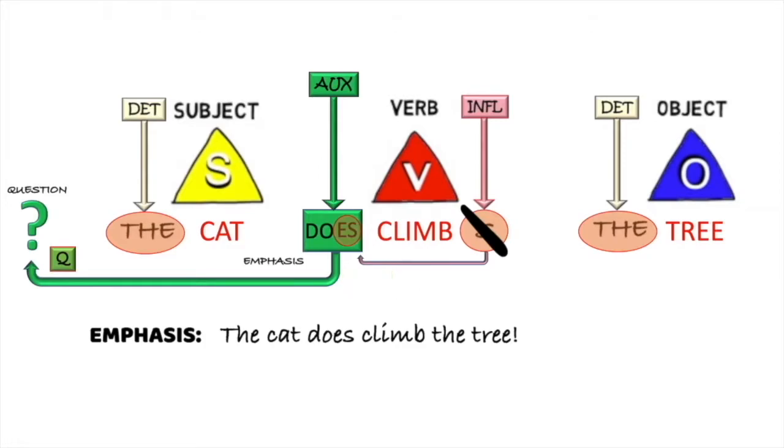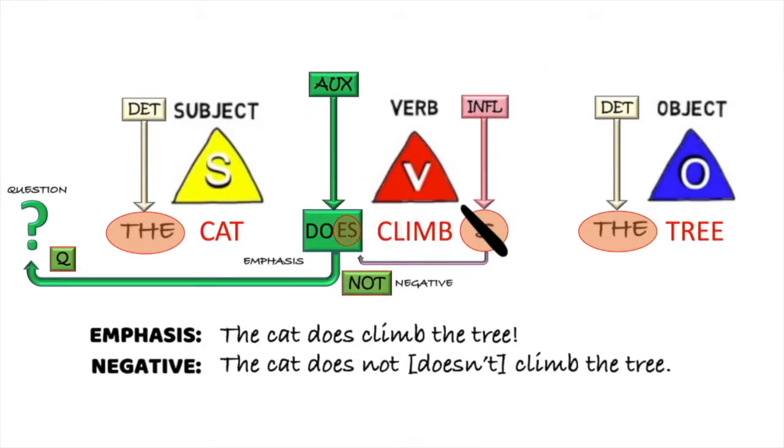To make the sentence negative, we just add NOT to the auxiliary. The cat does NOT, or in conversation, doesn't climb the tree.